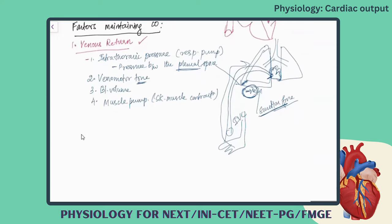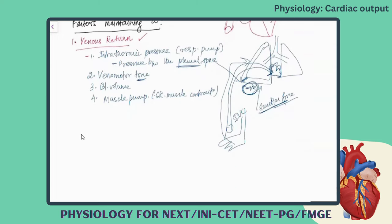These are the factors which maintain the venous return. The second major factor in maintaining cardiac output is the force of heart. All the factors required for venous return may be normal, but if the cardiac muscle — the myometrium of the cardiac muscle — is not maintaining its contractility, it is not contracting to the required level, then even though venous return is normal, the cardiac output will be affected.